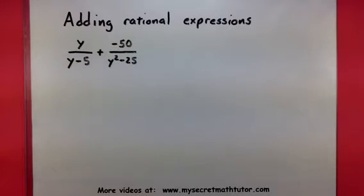Welcome to My Secret Math Tutor. In this example, we are going to add together two rational expressions: y divided by y minus 5 and negative 50 divided by y squared minus 25.